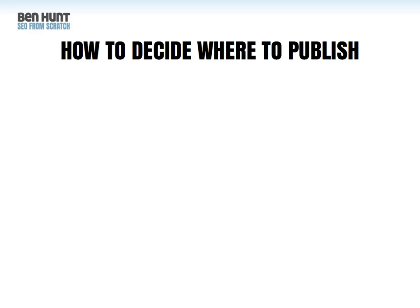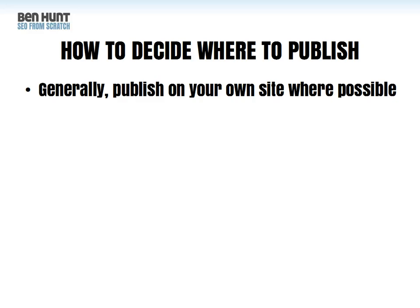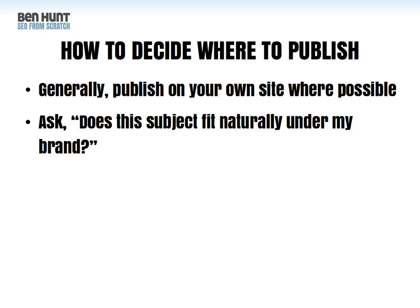So how do you decide where to publish? We've got these four options — which one's best? Generally, the ideal is to publish on your own site wherever possible, because that's going to build your domain authority and all those links will point into that main domain. A good question to ask is: does the subject of this page fit naturally under my brand? If it does, publish on your main site. If it's not really relevant for somebody to land there and see your domain name, logo, and navigation, then consider publishing elsewhere or creating a new site.